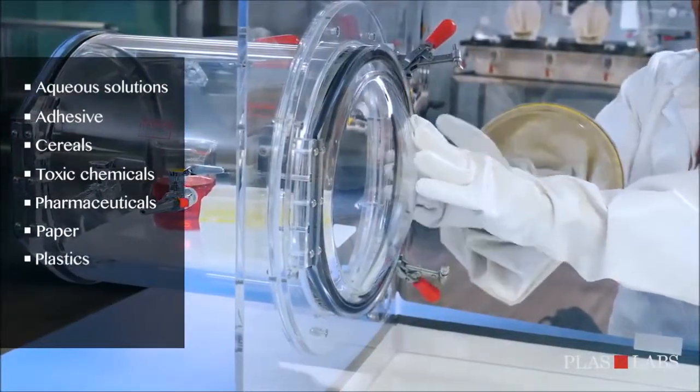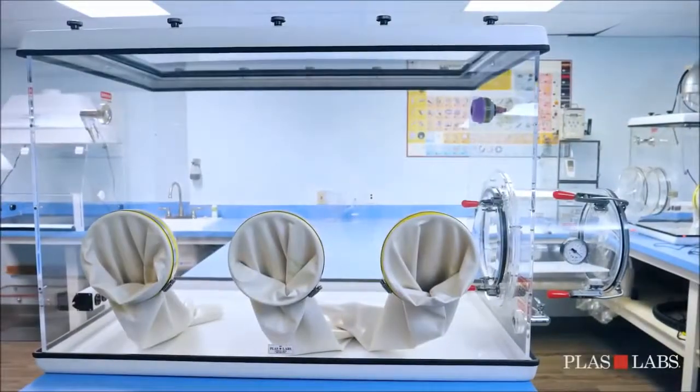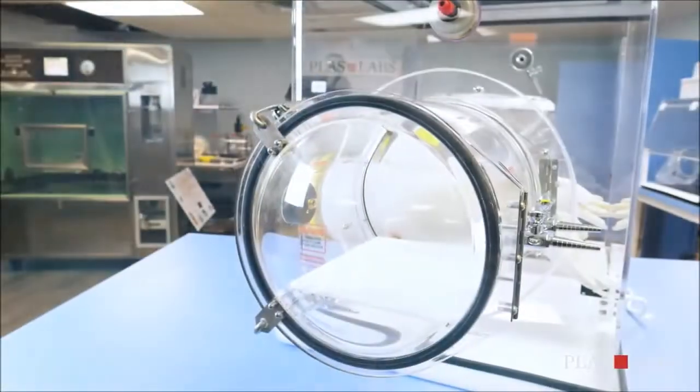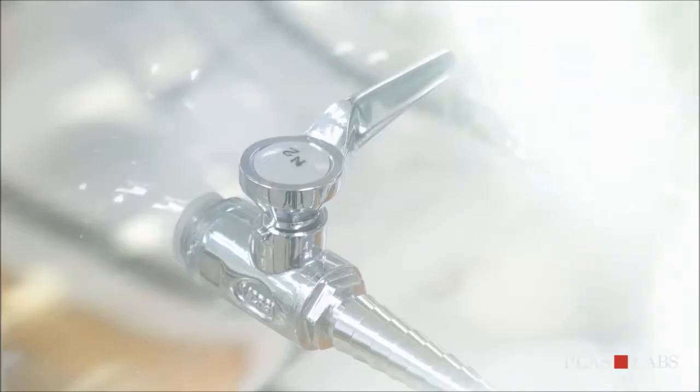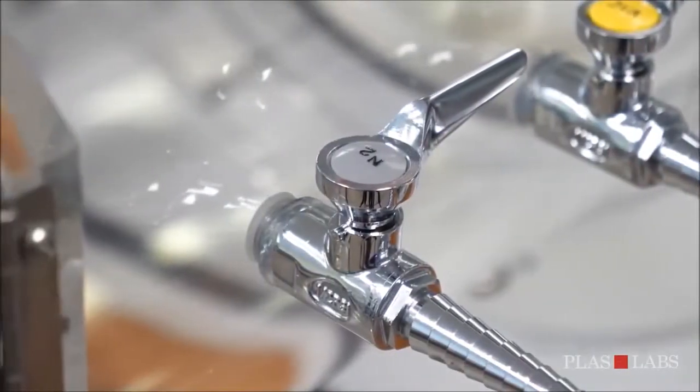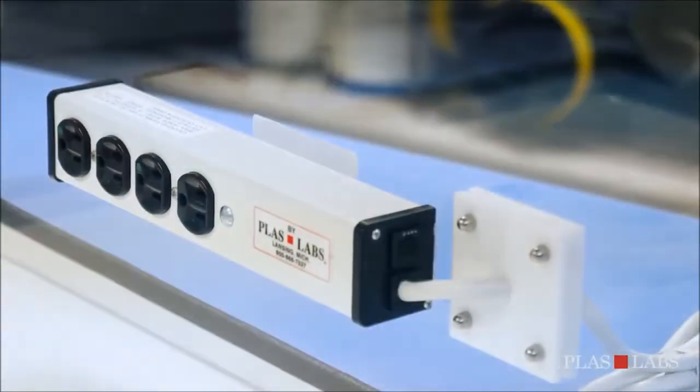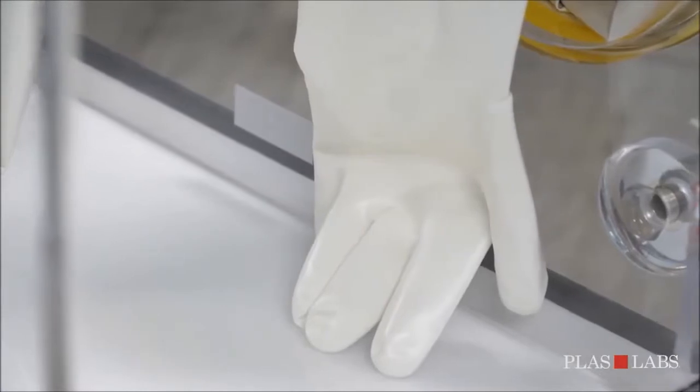Each 830 series glove box comes standard with transfer chamber with purging valves, pressure gauge and leveling tray, two purging valves on the main chamber, removable top, electrical outlet strip, white ambidextrous Hypalon material gloves, and small pressure relief pop valve with a small HEPA filter.